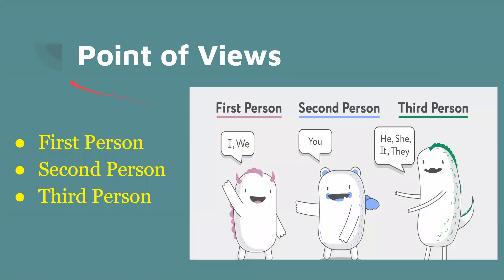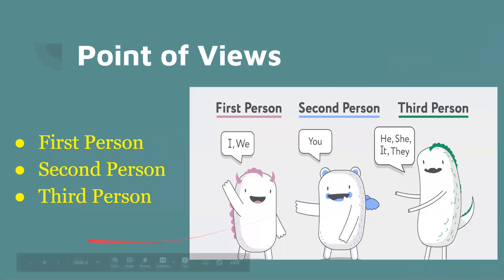These are the three different types of point of view. First person, which usually includes 'I' or 'we.' Second person, which includes 'you.' Or third person, which is 'he,' 'she,' 'it,' or 'they.'